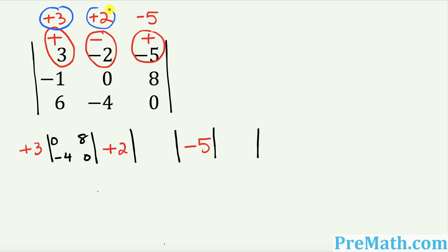Now focus on the positive 2. We repeat the same process — hide the column that contains positive 2 and also the top row. The unhidden numbers are negative 1, 8, 6, and 0. Put those numbers in the box in that same order: negative 1, 8, 6, and 0.